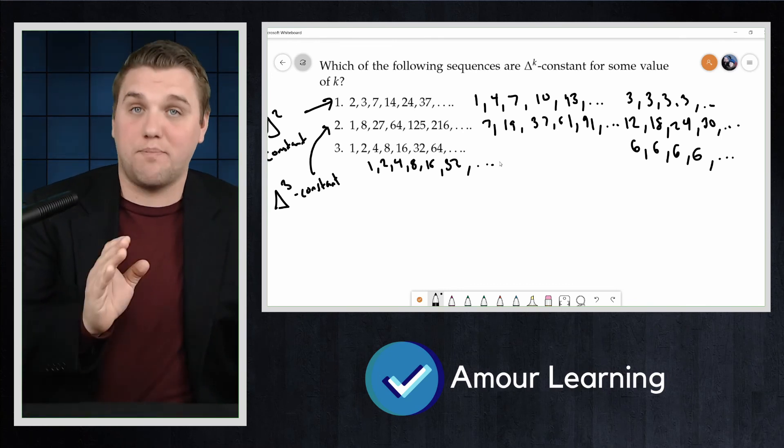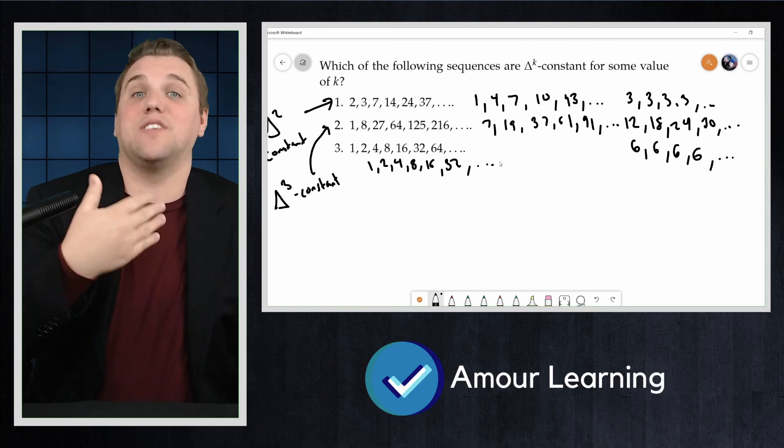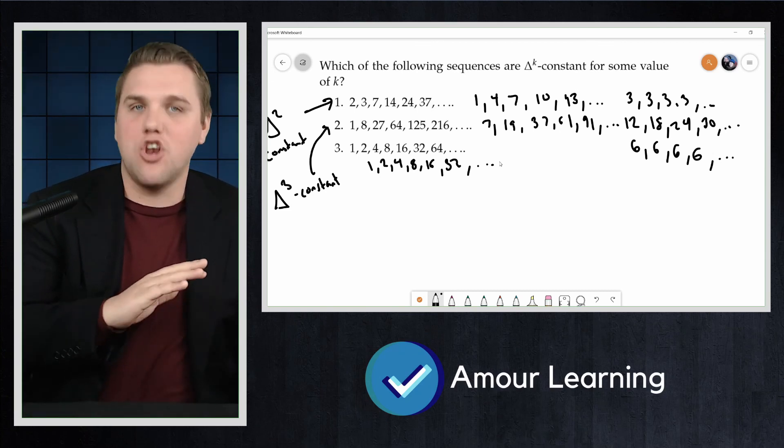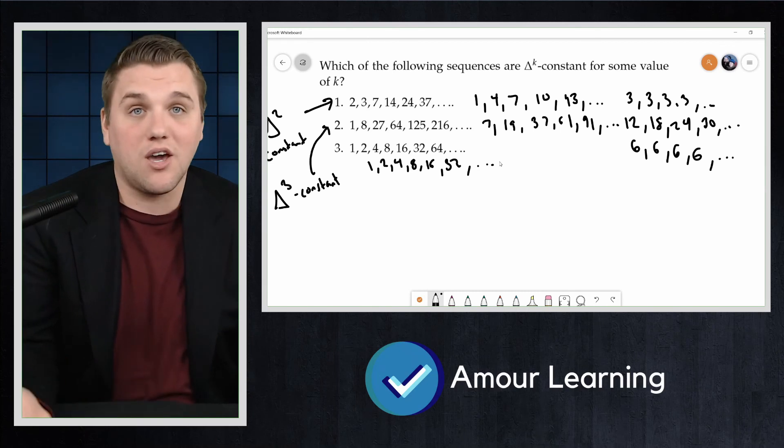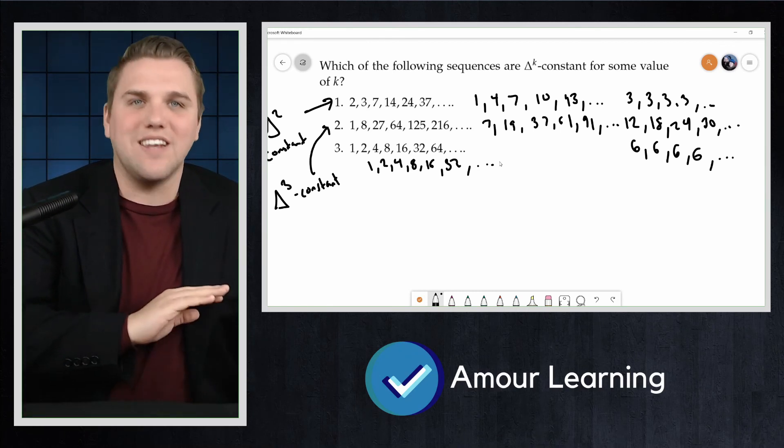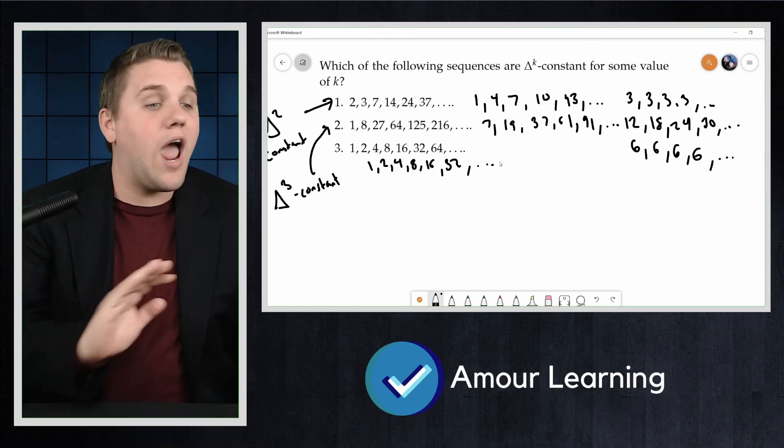No matter how many times we repeat this, we will always have the same sequence, which in particular means no finite number of differences will be constant. Thus, the sequence is not delta k constant for any k.